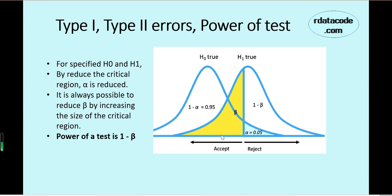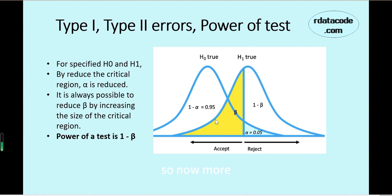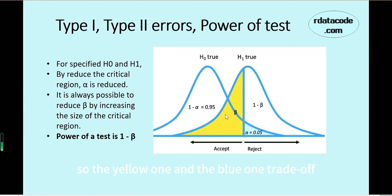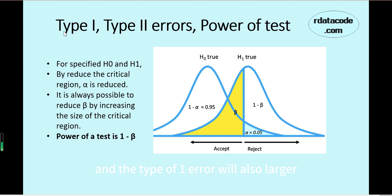It is also possible that you will get a larger probability of committing a Type 1 error, because lowering the decision rule limit makes you more likely to reject H0. For example, if you get 7.5 in a sample, you will now reject, whereas before you would not reject. So there is more chance of a wrongful rejection. The yellow area and the blue area represent a trade-off between Type 1 and Type 2 errors. Lowering the decision rule decreases Type 2 error and increases the power of the test, but also increases Type 1 error.